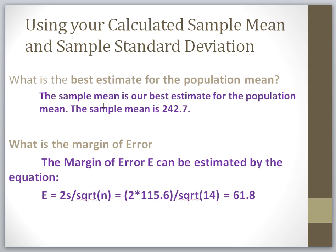Let's go to the next example, which is part of this problem. Using your calculated sample mean and sample standard deviation, what is the best estimate for the population mean? Our best estimate for the population mean is always going to be our sample mean. It may not be a perfect estimate, but it's the best estimate we have — since we generally cannot measure the full population. So the answer is 242.7.